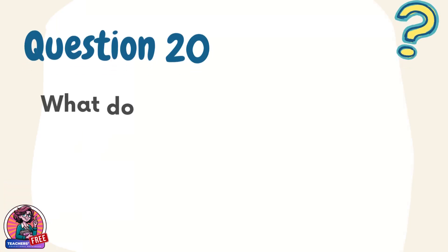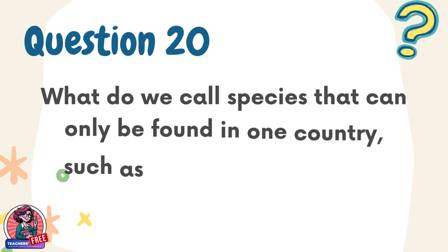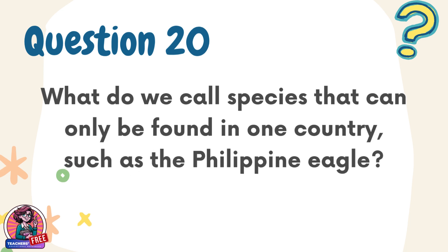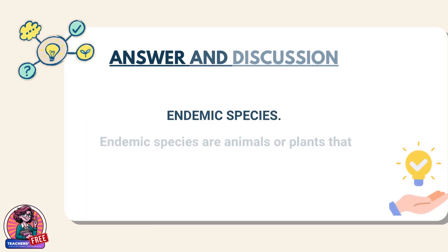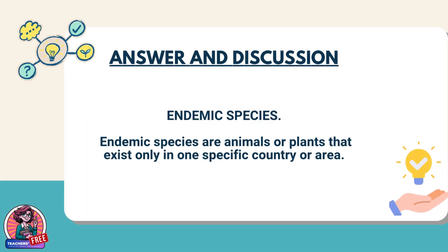Question 20. What do we call species that can only be found in one country, such as the Philippine eagle? Answer: Endemic species. Endemic species are animals or plants that exist only in one specific country or area.